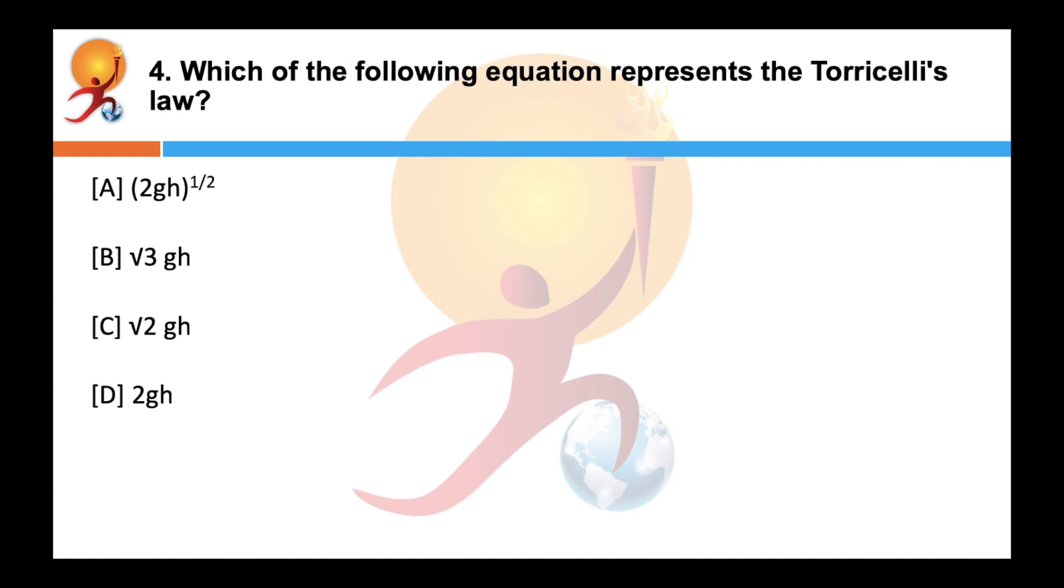Which of the following equations represents the Torricelli's law? Correct answer is A. Torricelli's theorem is also called as Torricelli's law. It states that the speed v of liquid flowing under the force of gravity out of an opening in a tank is proportional jointly to the square root of the vertical distance h between the liquid surface and the surface of the opening and to the square root of double the acceleration due to gravity. So the formula comes at v is equal to the whole square root of 2gh.